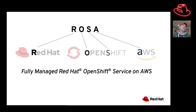Welcome to a quick getting started overview on ROSA, otherwise known as Red Hat OpenShift on AWS. This is a fully managed service of Red Hat OpenShift on AWS.